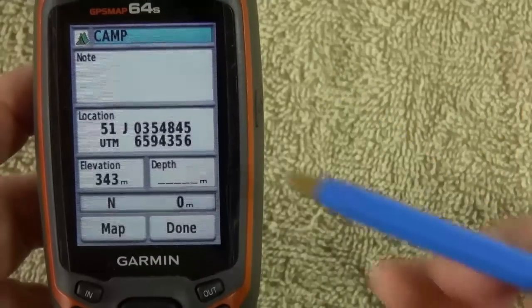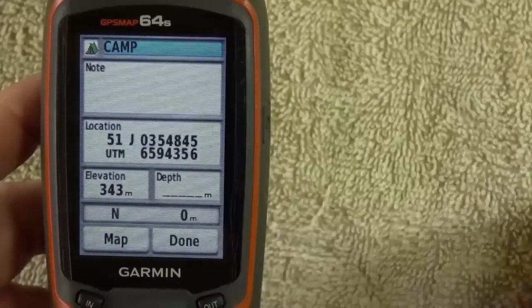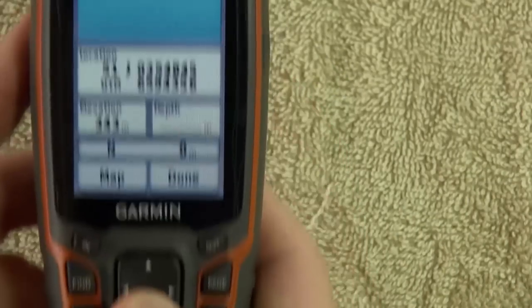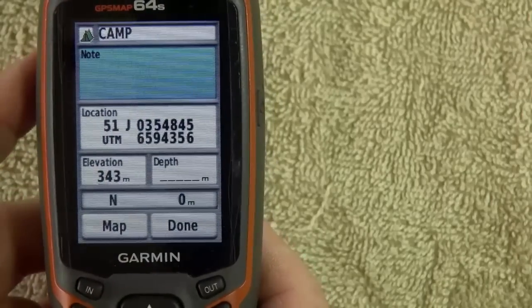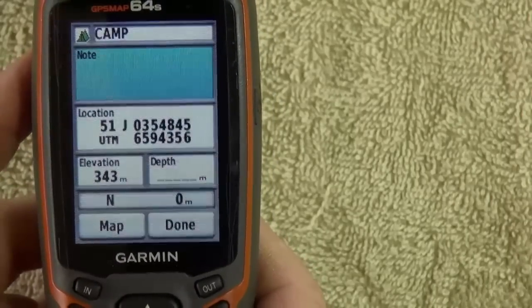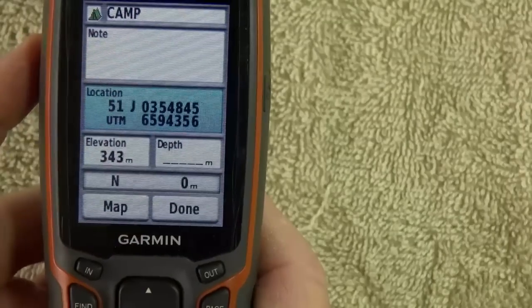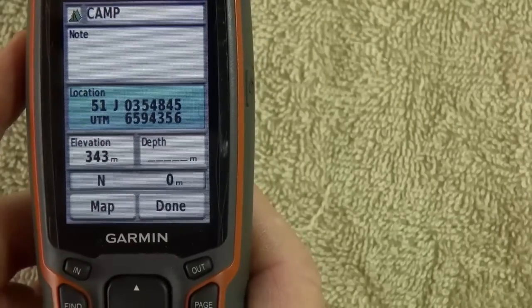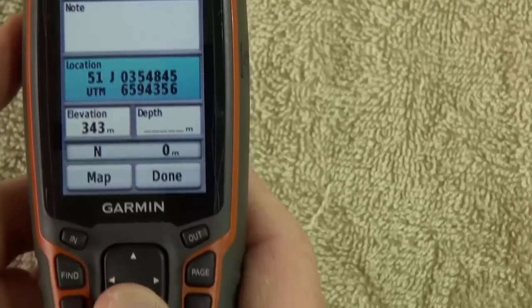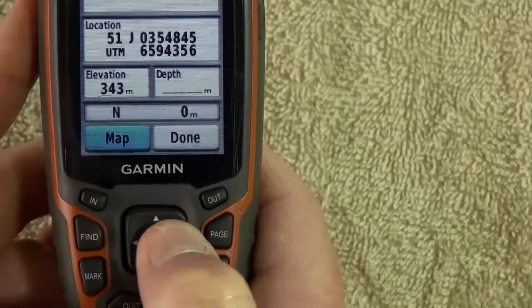Now it says camp up here. Using the rocker, come down. You can leave a note there if you want to remind you. It depends. That is the location of where we are right now. So let's say that's our camp where we are now. And then you highlight done.